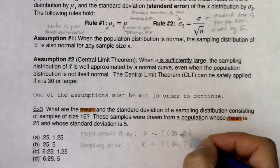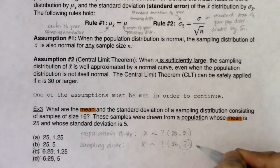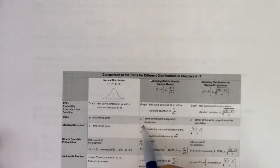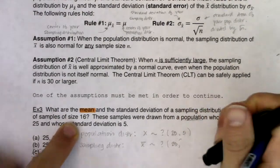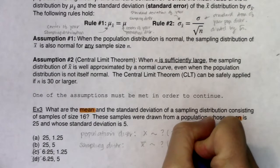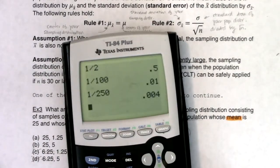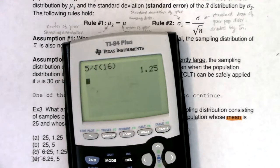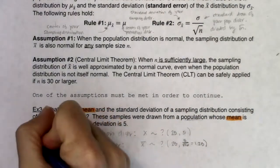Now let's figure out the standard error — the standard deviation of the sampling distribution. The rule says: take the population standard deviation and divide by the square root of N. My population standard deviation was 5, and samples are of size 16. So I calculate 5 divided by the square root of 16, which equals 1.25. That tells me the answer is A.